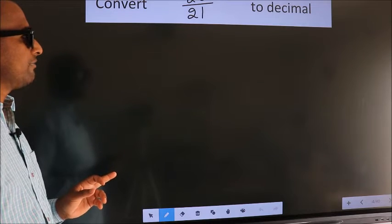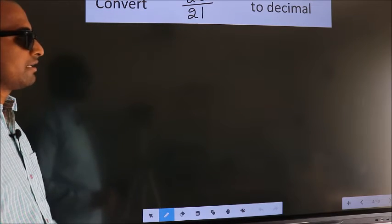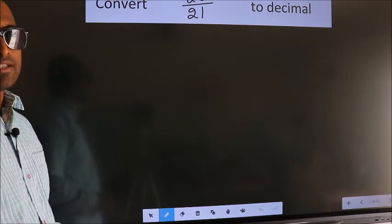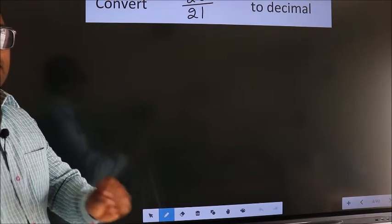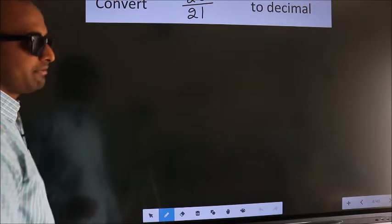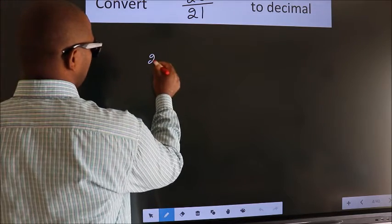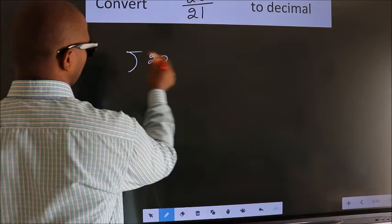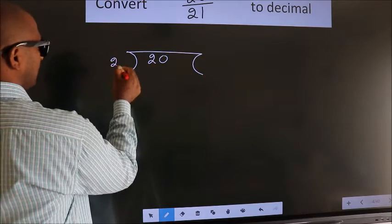Convert 20 by 21 to decimal. To convert this to decimal, we have to divide, and to divide, we should frame it in this way. 20 here, 21 here.